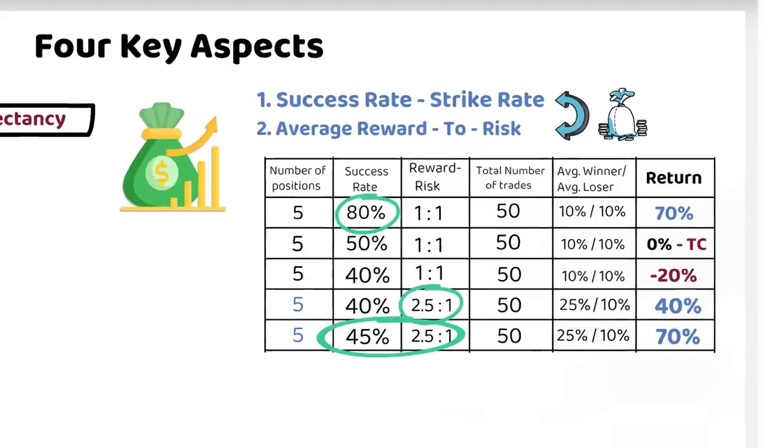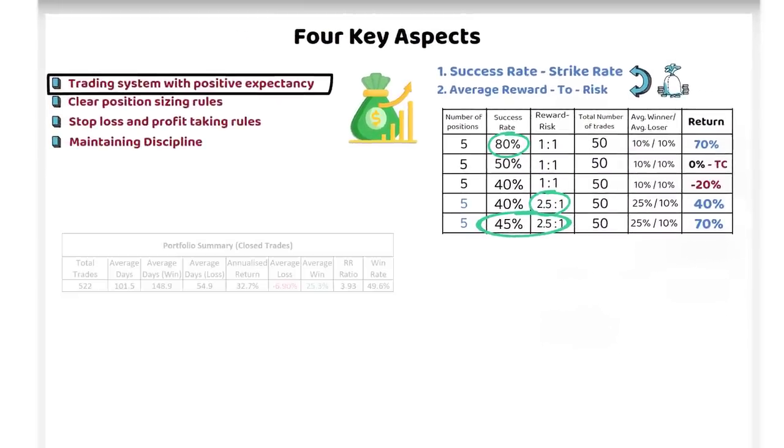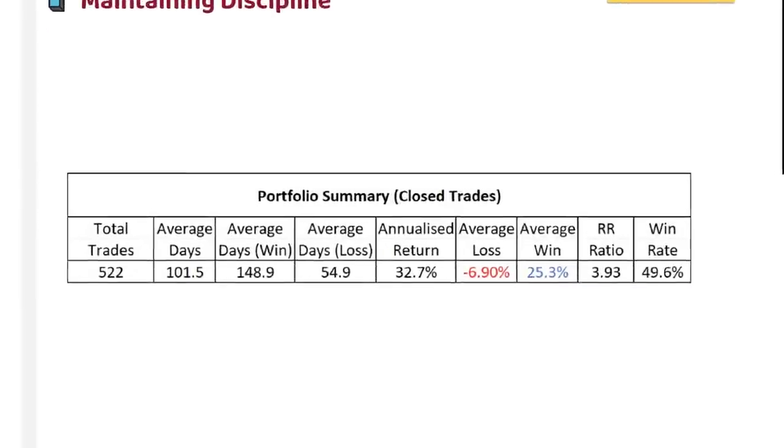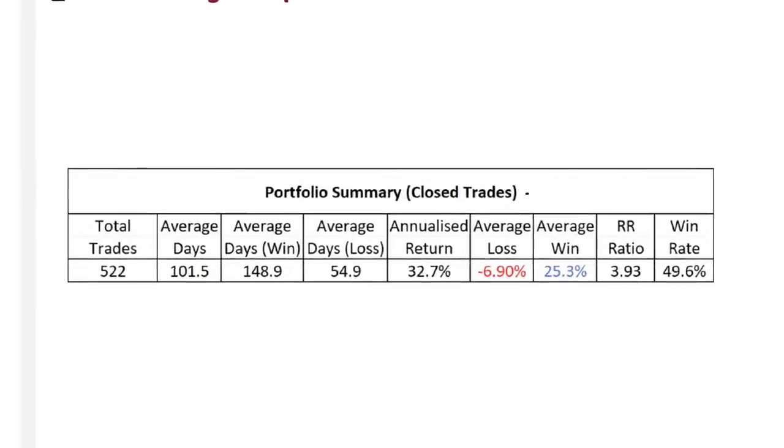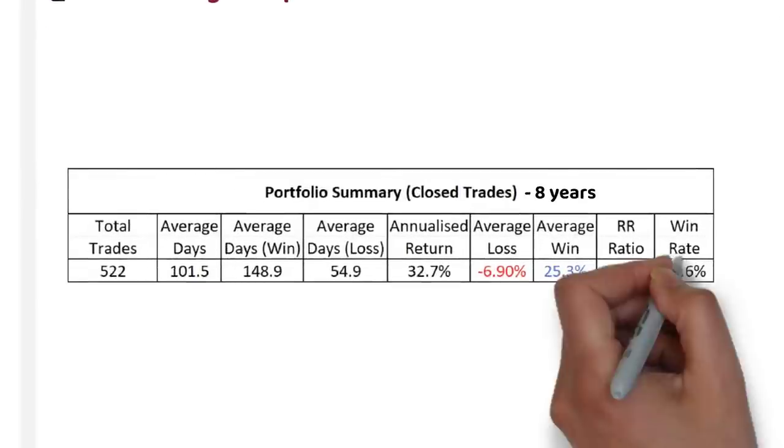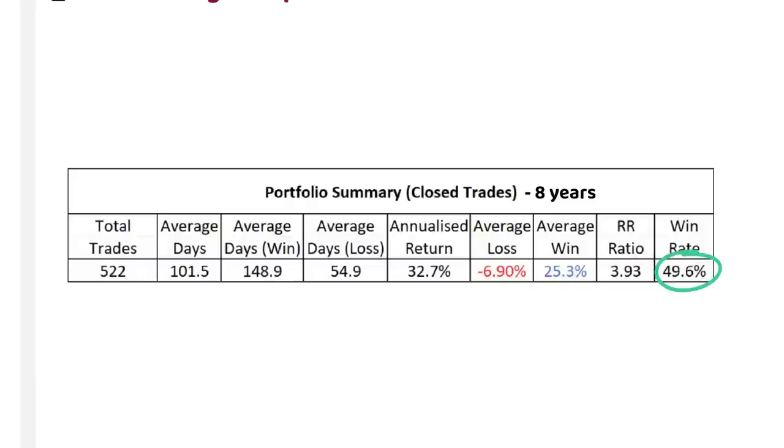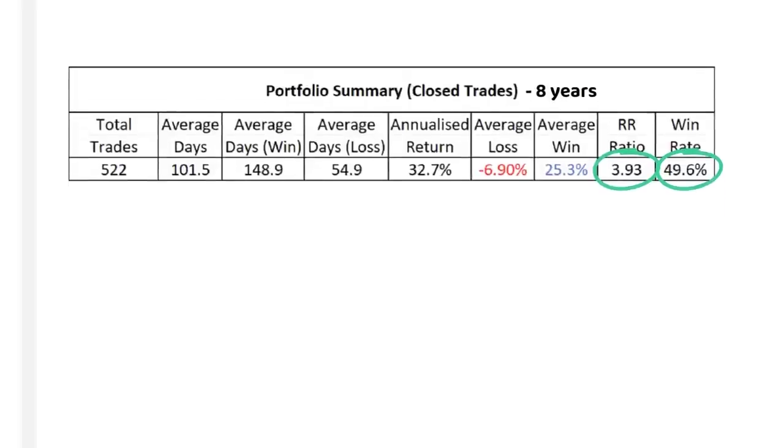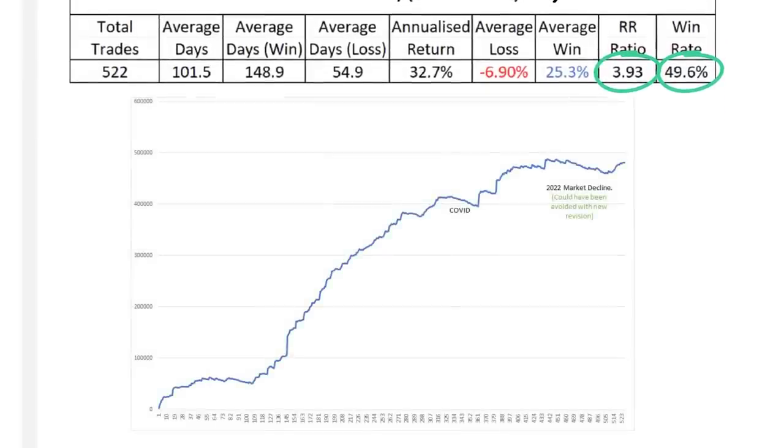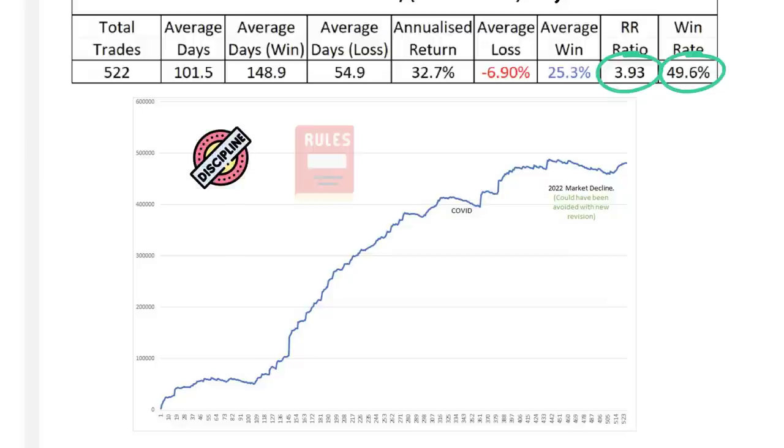To help you visualize how equity could grow through a system of positive expectancy, you can see my stats over the last 8 years. You can see that currently I have just under a 50% success rate, but with a reward to risk ratio of almost 4 to 1. Such stats resulted in this equity curve. Remember, however, the hidden factor is having the discipline to follow the rules during periods of lacklustre performance.